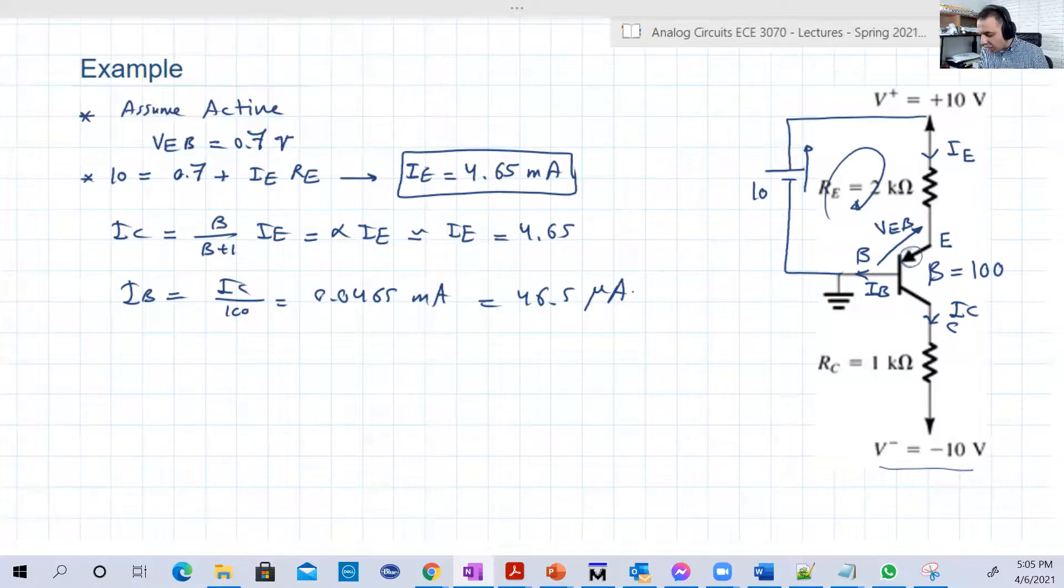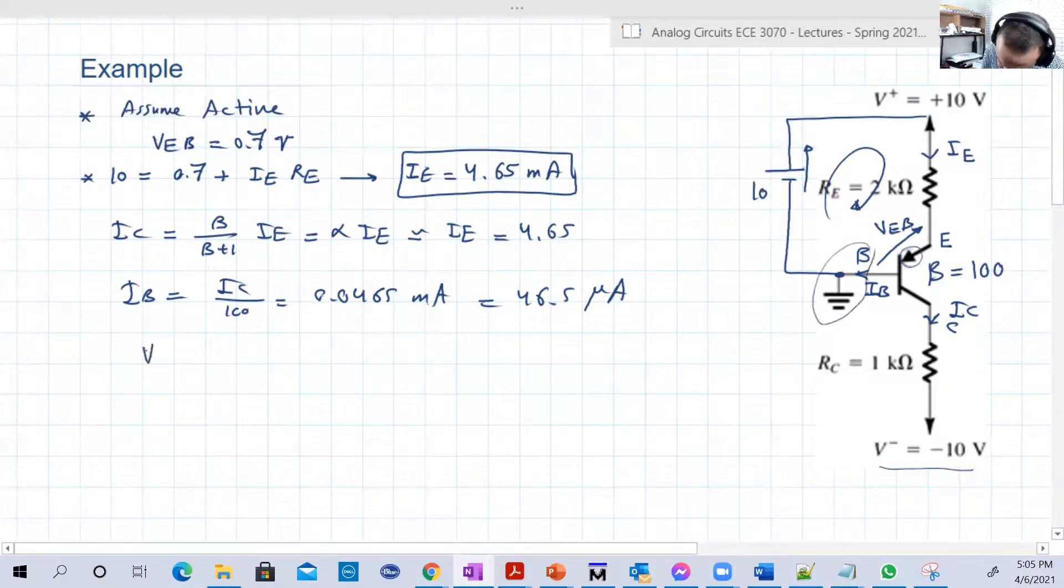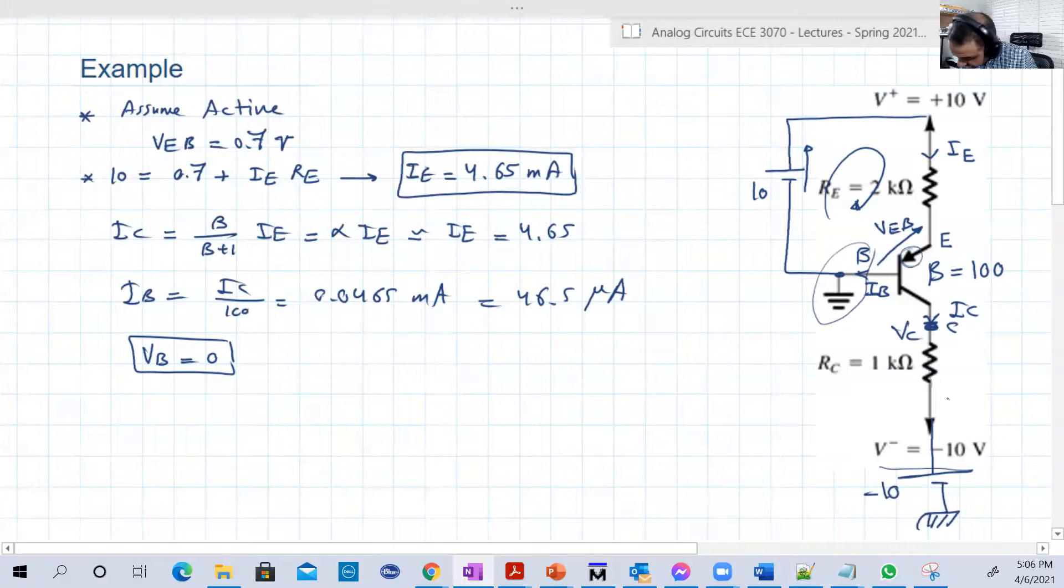So how we can calculate VB? Let's check. Here is the base, the base basically is connected to the ground, which is really nice, so VB is equal to 0. Now VC here is VC, so this is the collector here. So we can draw this battery like this, it's minus 10 here.